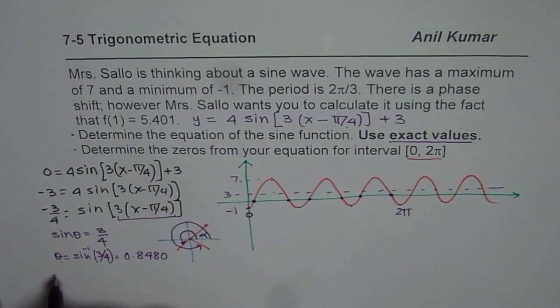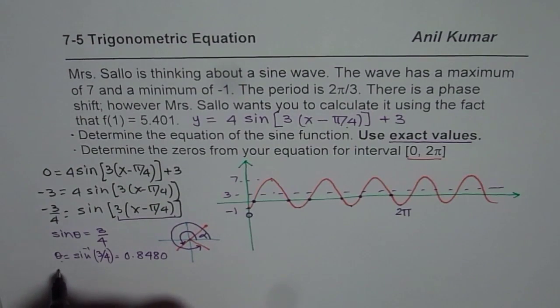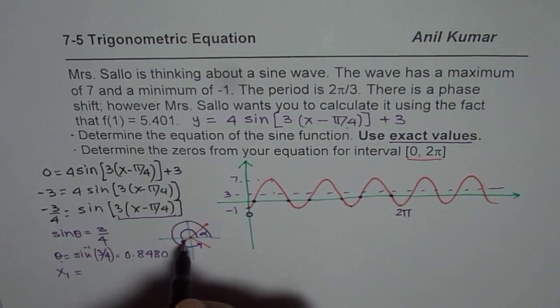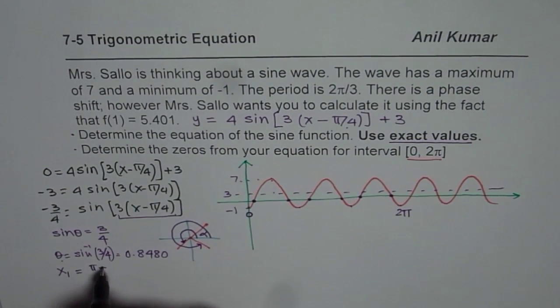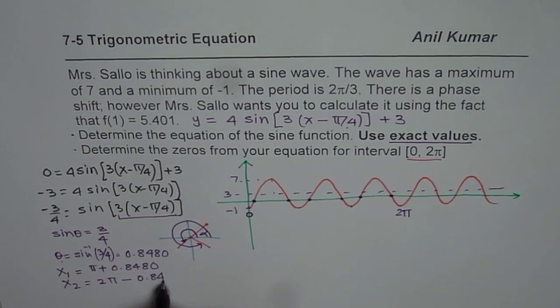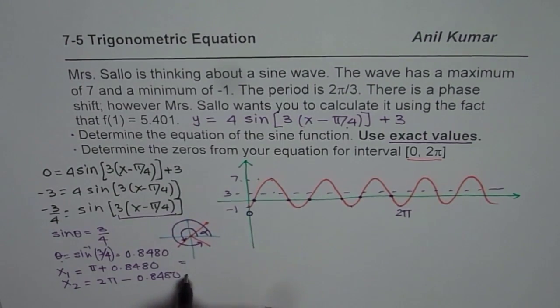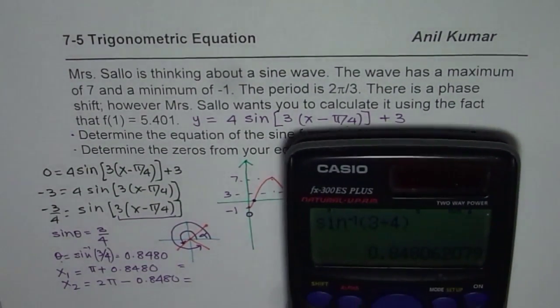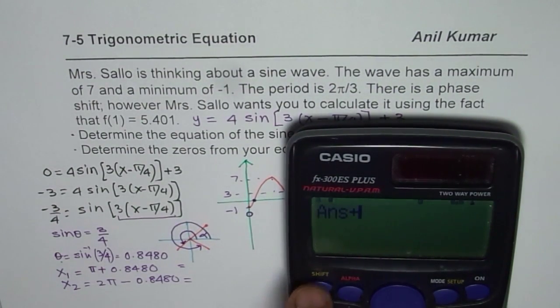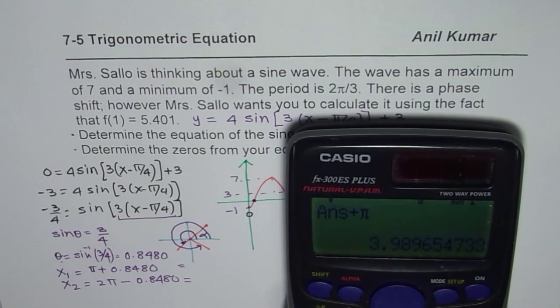So our angles, we should say now x₁ value will be π + 0.8480 and the second x₂ value will be 2π - 0.8480. So again let us take our calculator and find this out. So we will do plus π which gives us 3.989, so this is 3.9896.